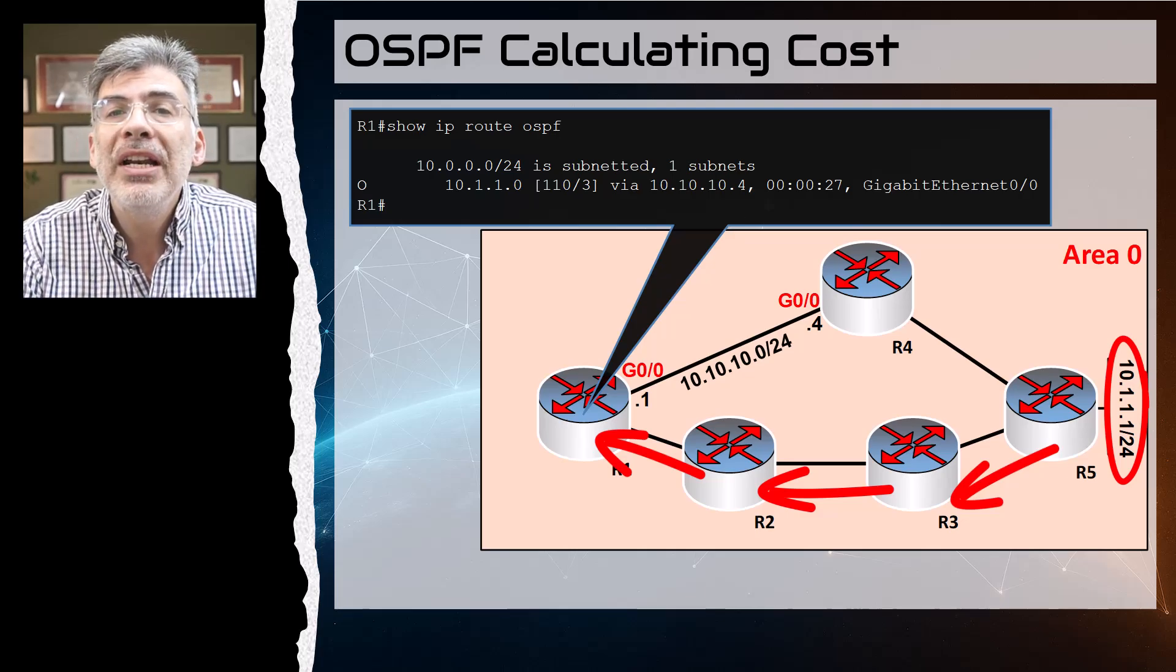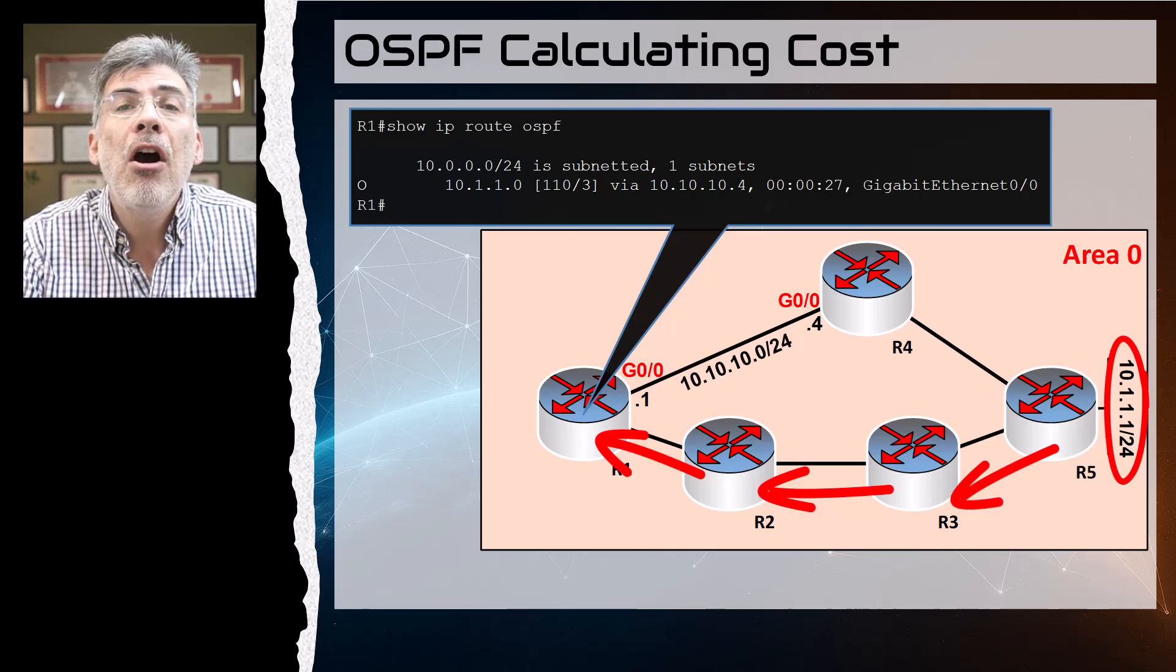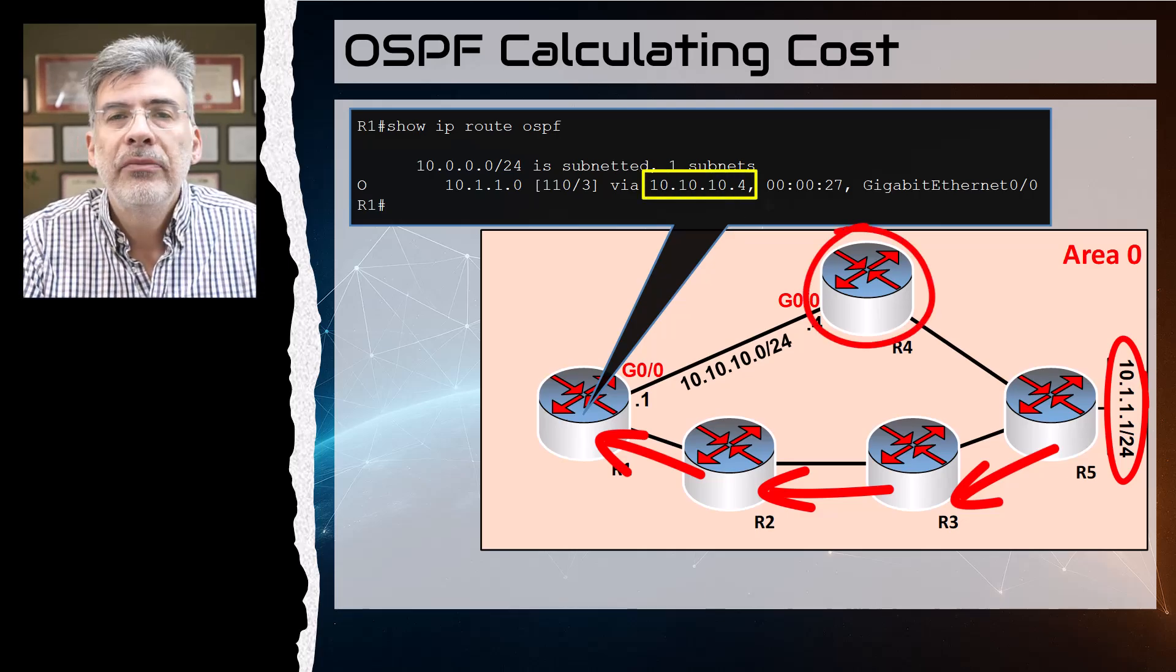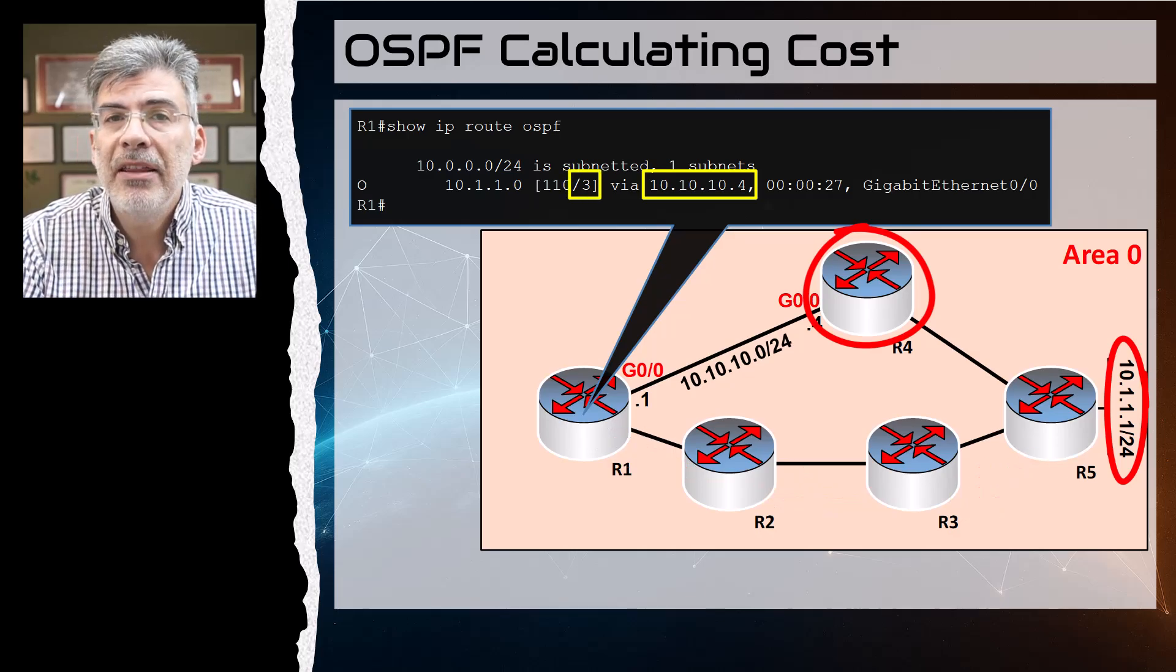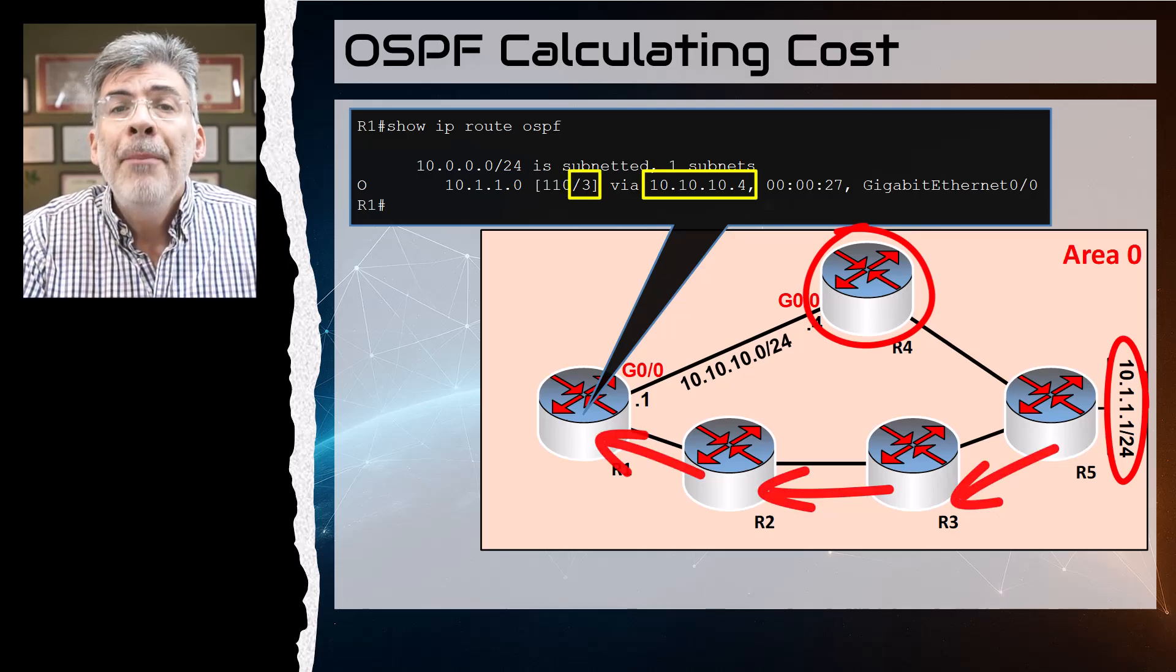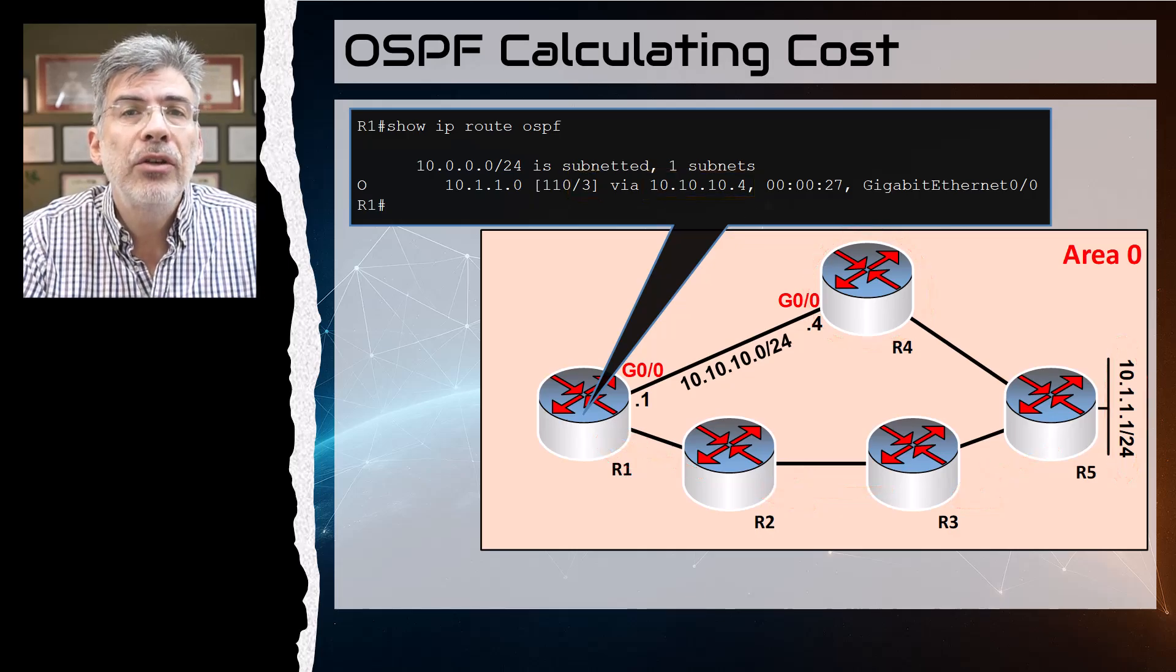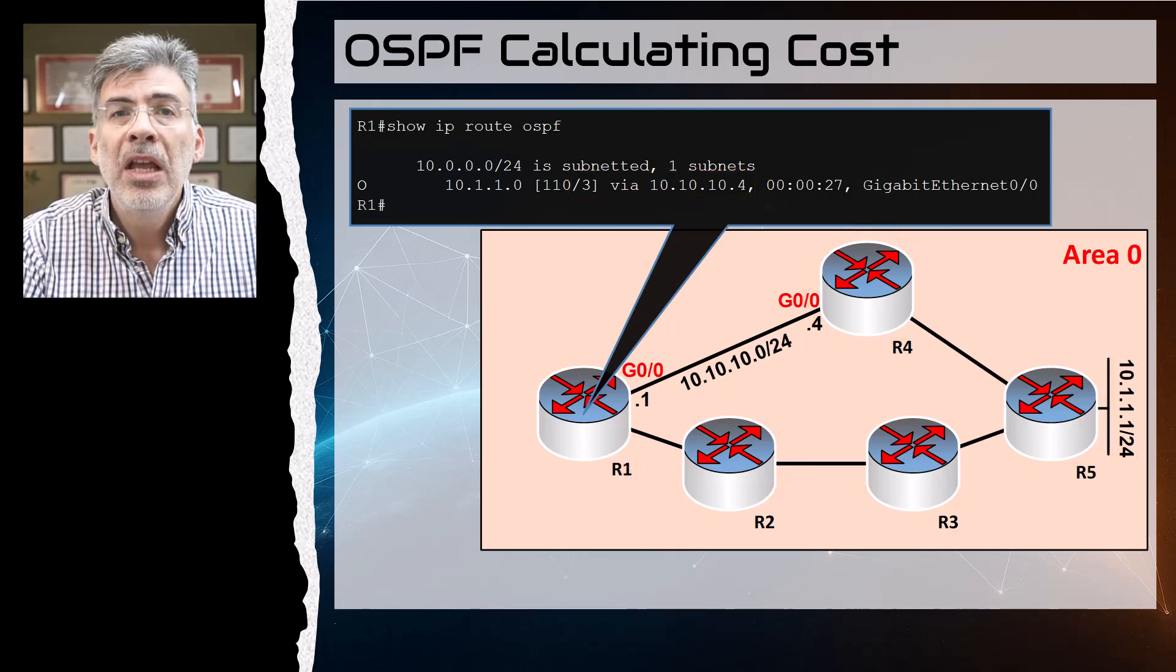So even though this network must have been advertised by OSPF via this path as well, it seems that R1 has chosen the path via R4 as the best path simply because the cost of that path is lower than this path.